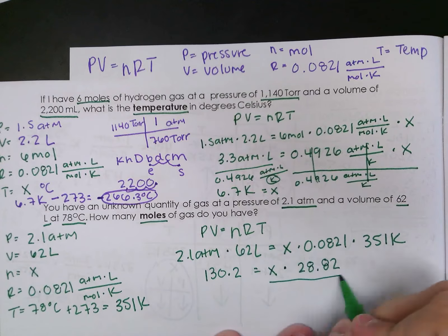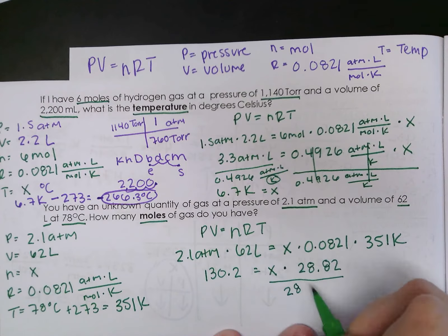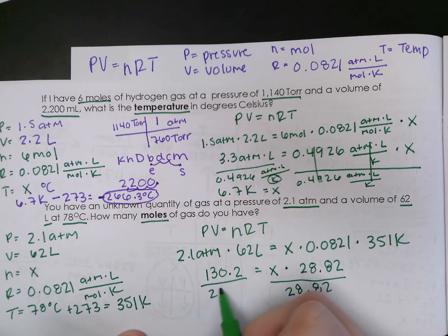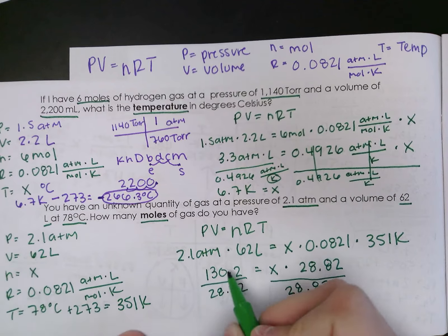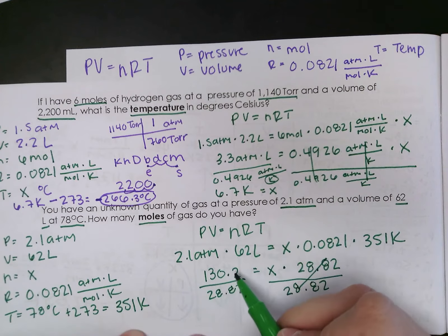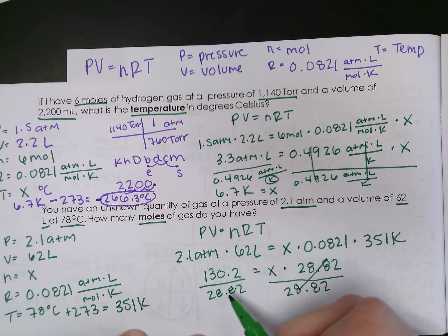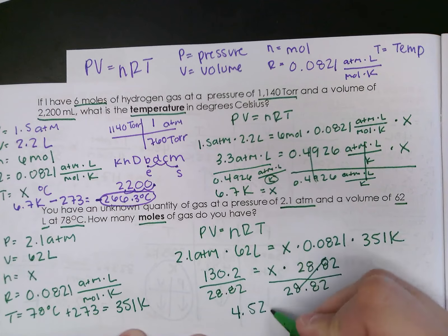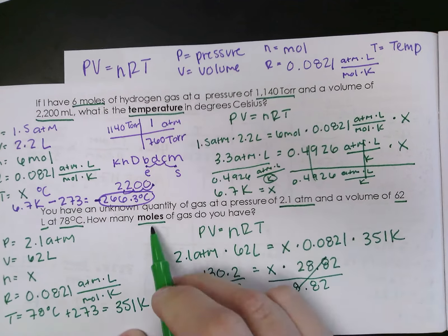I need to get X by itself, so I have to do the opposite operation. What I do to one side, I have to do to the other. These will cancel out. So I'm dividing 130.2 divided by 28.82. My final answer is 4.52 moles, because I'm looking for moles.